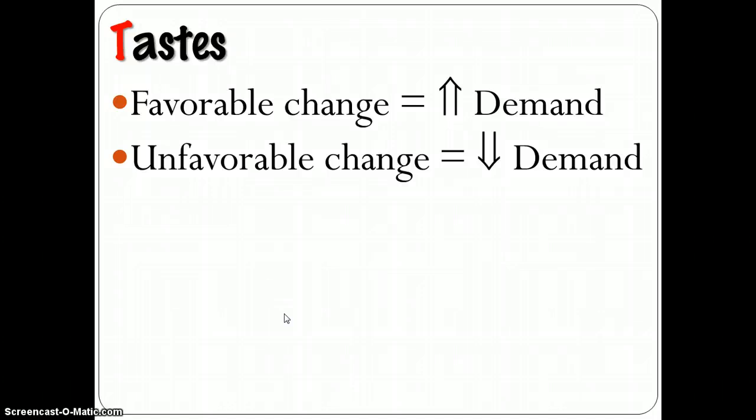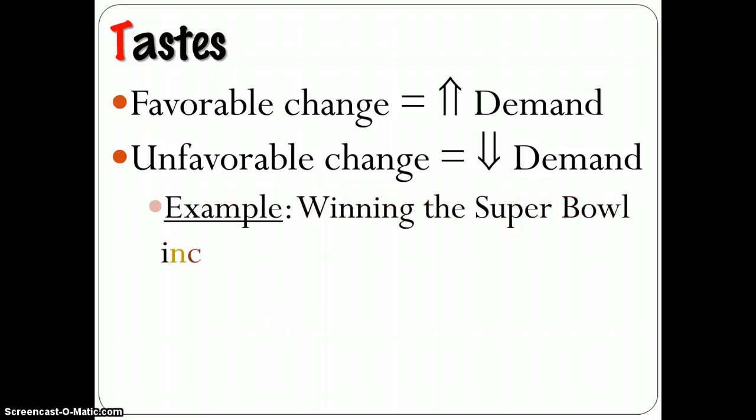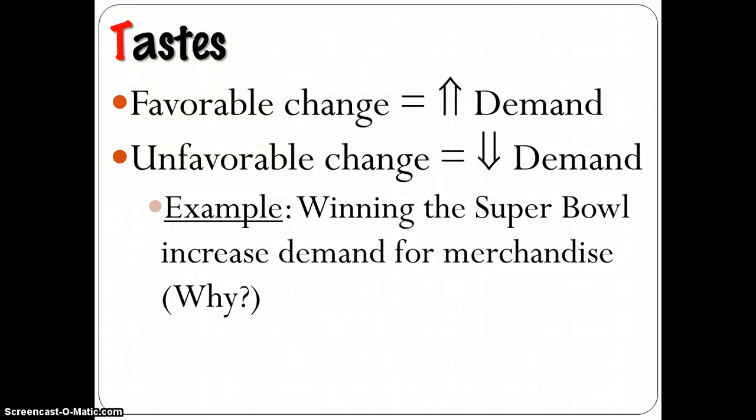And the demand for silly bands shoots through the roof and shifts to the right significantly. That would be a change in taste. Or if the Redskins win the Super Bowl, that would certainly increase demand for their merchandise because as a winner, people would want to be associated with that team and therefore they'd want to buy more stuff. And so our tastes will also impact our demand schedule, shifting it either to the right or left, depending on whether it's a positive change or a negative change.